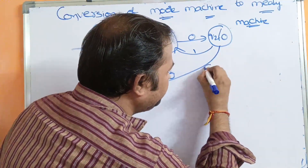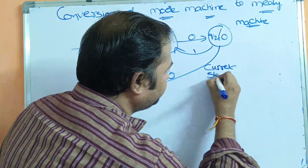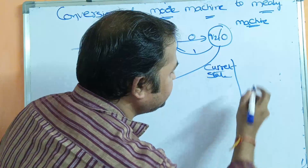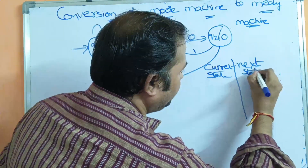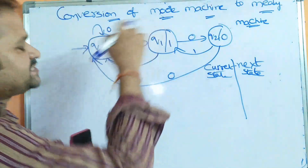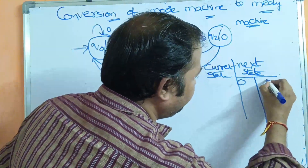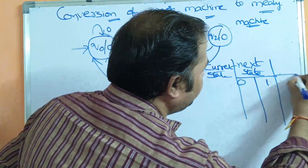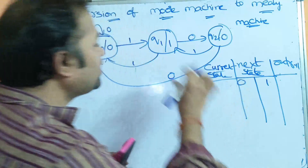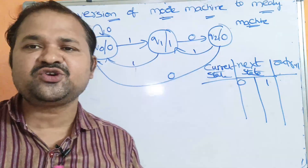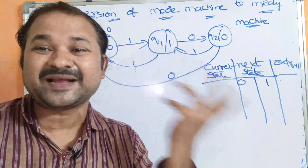The first column represents the current state. The second column represents the next state on input symbols — here the input symbols are 0 and 1. The third column represents the output. This is the Moore machine transition table. In a Moore machine, the output depends only on the present state.